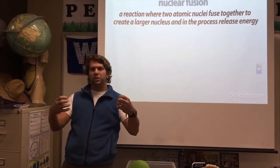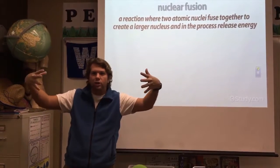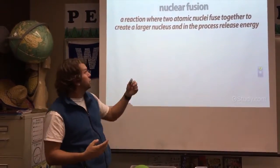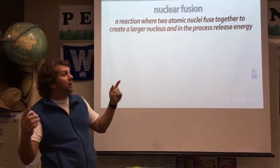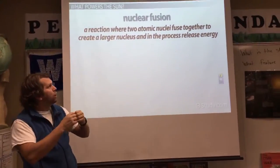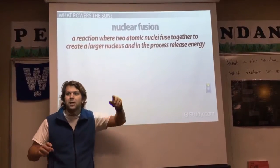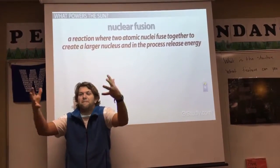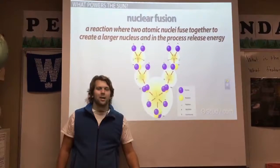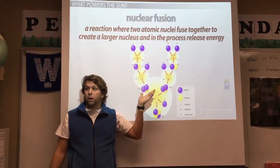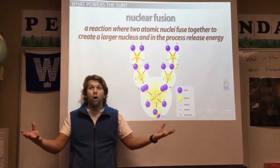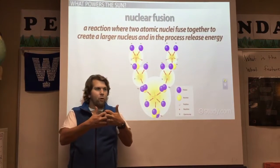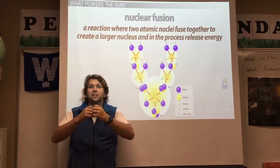So the sun gets its energy from nuclear fusion. Nuclear fusion — whenever something is fused together, that means two things are joined together and they're permanently stuck together. So this is the definition of nuclear fusion: a reaction where two atomic nuclei fuse together and create a larger nucleus. And during that process, they release energy. So the sun gets its energy from nuclear fusion — stuff getting fused together and energy being released.